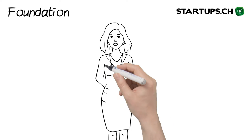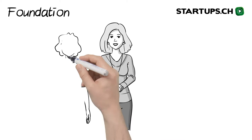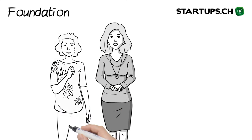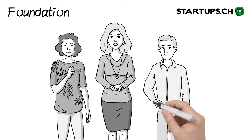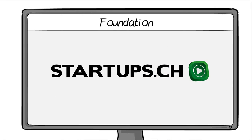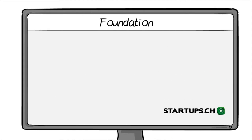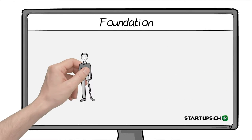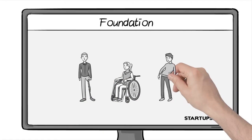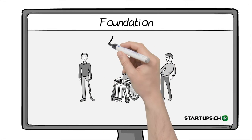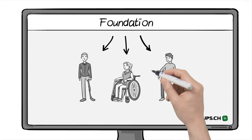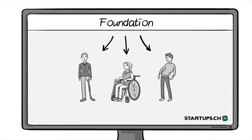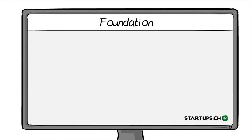Anna and other like-minded people would like to set up a foundation for people with disabilities. At startups.ch, they figured out that foundations do not have any members — instead they have beneficiaries, who are the foundation's benefit recipients.